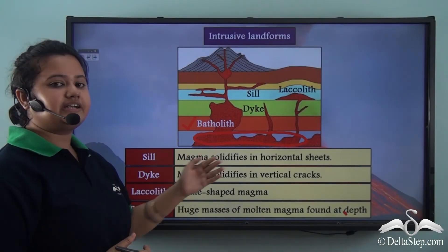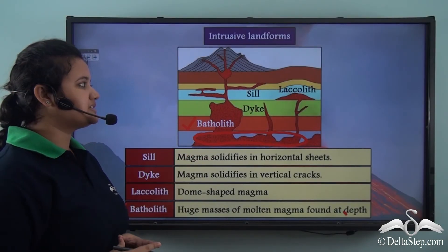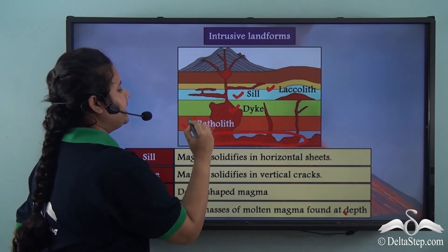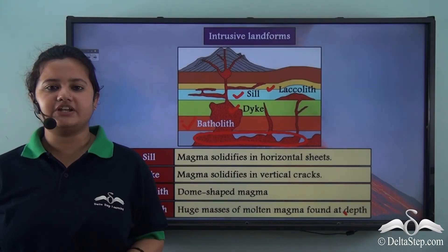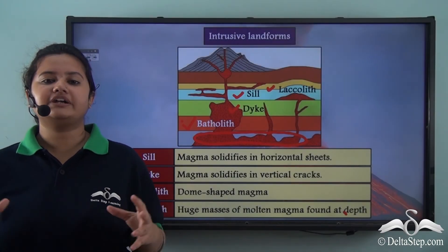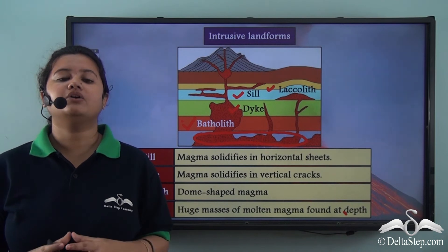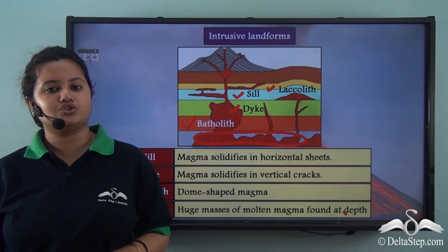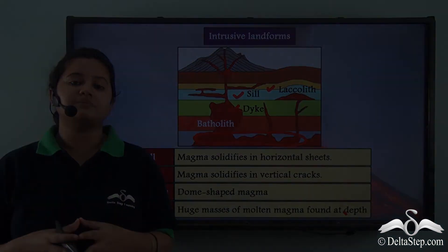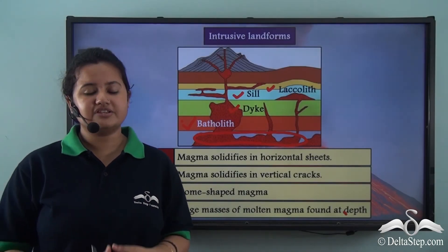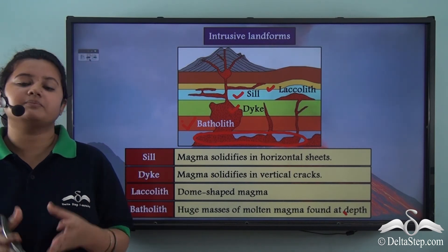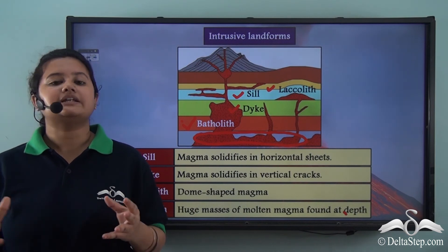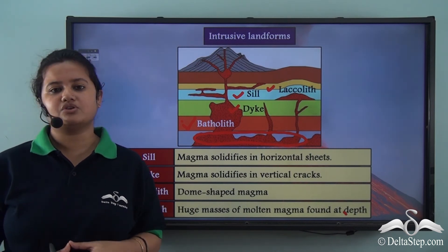So those are the different types of intrusive landforms. In today's video we learnt about different types of landforms formed by a volcano. They are primarily of two types: extrusive and intrusive. Extrusive landforms are formed at the earth's surface, while intrusive landforms are formed below the earth's surface. In our next video we will study about the distribution and importance of volcanoes.